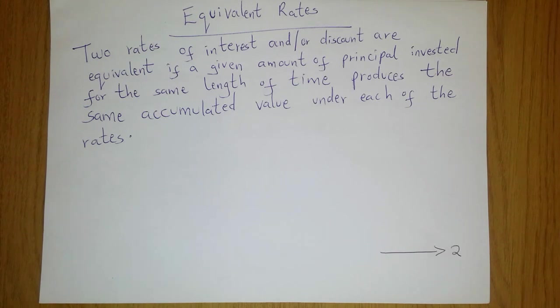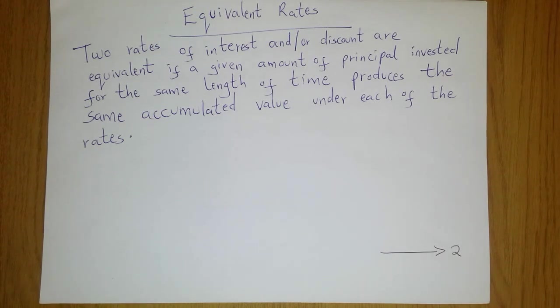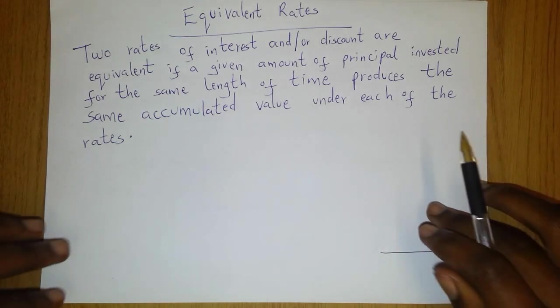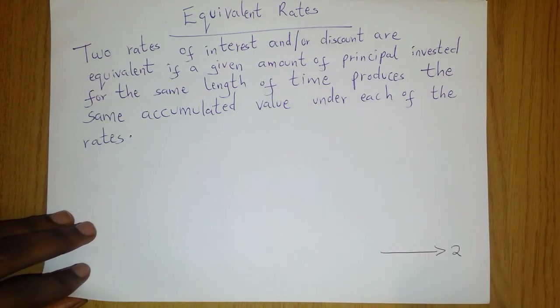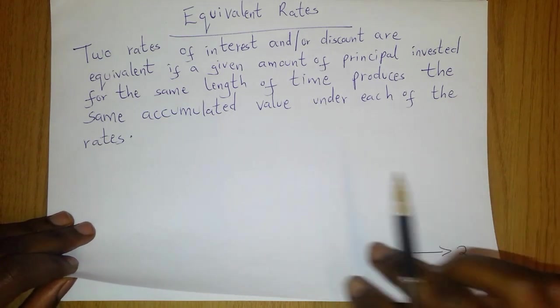Think of a rate that pays interest say twice a year and think of a rate that pays interest once a year. If these two rates end up giving you the same accumulated value at the end of that year, it simply means these two rates are equivalent. We will look at this in unit 3.